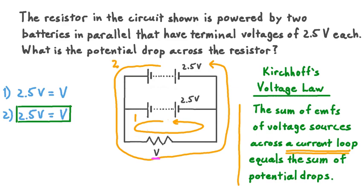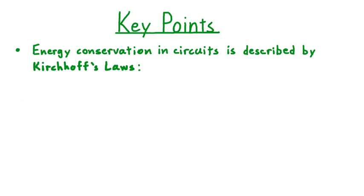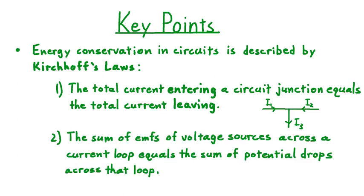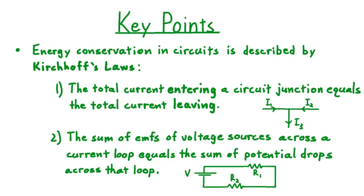Let's summarize what we've learned about energy conservation in circuits. Energy conservation in circuits is described by Kirchhoff's laws. The first, Kirchhoff's current law, says that the total current entering a junction in a circuit equals the total current leaving that junction — so if I1 and I2 enter and I3 leaves, then I3 equals I1 plus I2. The second, Kirchhoff's voltage law, says that the sum of EMFs of voltage sources across a current loop equals the sum of potential drops across that same loop — so the total EMF V equals the potential drops across components such as resistors R1 and R2.